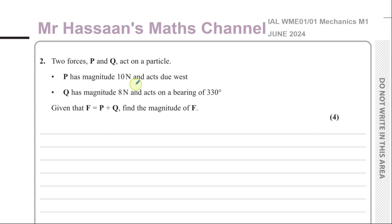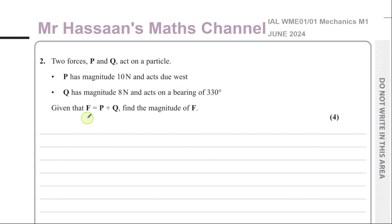It says two forces, P and Q, act on a particle. P has a magnitude of 10 Newtons and acts due west, and Q has a magnitude of 8 Newtons and acts on a bearing of 330 degrees. Given that F is equal to P plus Q, find the magnitude of F.